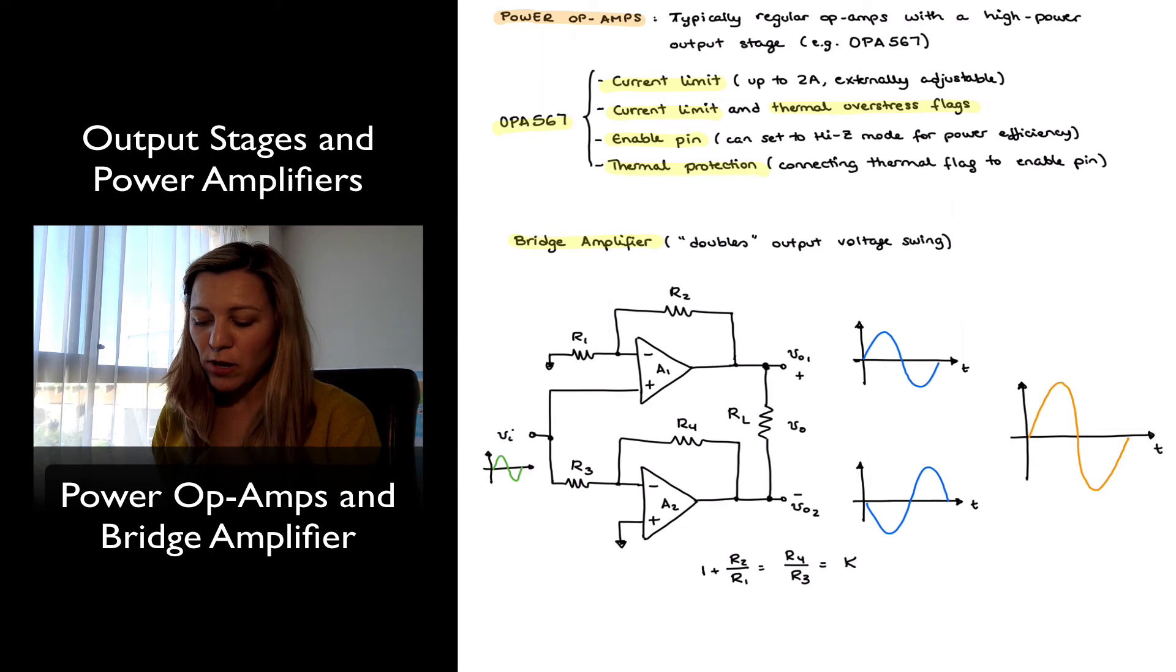In that case, we will have that the non-inverting amplifier A1 will have a gain of K, and the inverting amplifier A2 will have a gain of negative K.